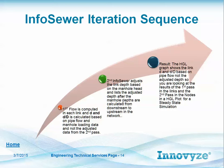InfoSewer is a modified Muskingum-Cunge solution. It basically uses two iterations. The first pass estimates what's happening in the pipes and links based on loading — it calculates depth and flow. The second pass adjusts what's found in the first pass based on backwater effects, pressure, and other downstream conditions, then tells you the adjusted depth and adjusted velocity. The adjusted graph shows the link D/D, not the adjusted depth, so you need to check reports for adjusted depth to see what's used on the second pass.